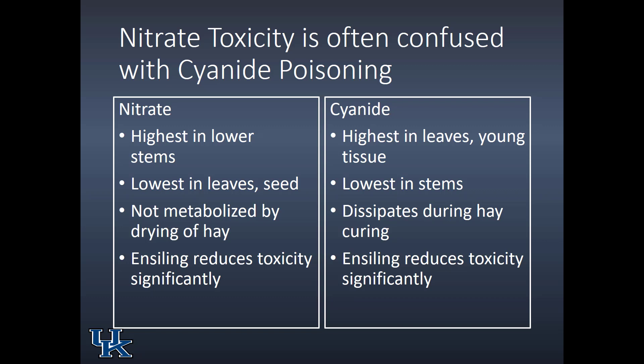These two are often confused, so let's look at why. Nitrate is highest in the lower stems, while cyanide is highest in the leaves and young tissue. Nitrate is lowest in leaves and seed; cyanide is lowest in the stem — so it's exactly backwards. Nitrate is not metabolized by the drying of hay — think of it like salt: dry the leaf and it doesn't get less salty, the nitrate remains as the water leaves. Cyanide, after hay cutting, dissipates as a gas, so the drier the hay the lower the cyanide. Similarly, ensiling reduces toxicity significantly for both nitrate and cyanide.